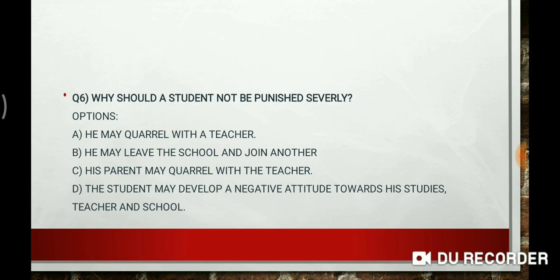Question 6. Why should a student not be punished severely? Options: he may quarrel with the teacher; he may leave the school and join another; his parents may quarrel with the teacher; or the student may develop a negative attitude towards his studies, teacher, and school. The right answer is that the student may develop a negative attitude towards his studies, teacher, and school.